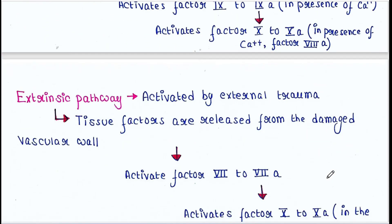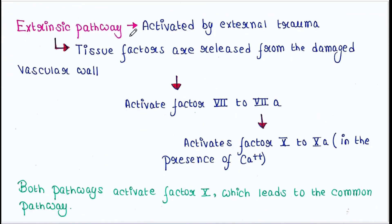Next is the extrinsic pathway. It is activated by external trauma. Tissue factors are released from the damaged vascular wall, which activate factor 7 to 7A. 7A activates factor 10 to 10A in the presence of calcium.